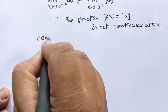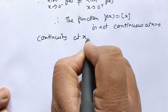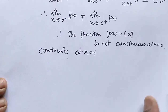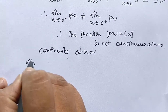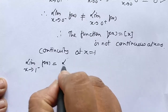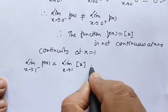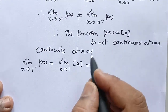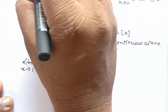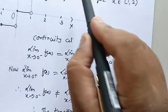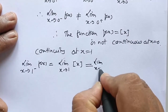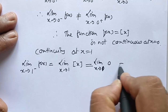Now we shall check the continuity at x equal to 1. For the left-hand limit as x tends to 1 minus: x is tending to 1 from the left, so we are in the interval 0 to 1, where f(x) is defined as 0. Therefore, the left-hand limit equals limit as x tends to 1 of 0, which equals 0.